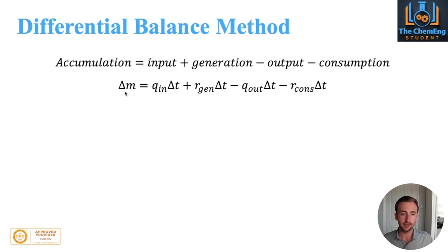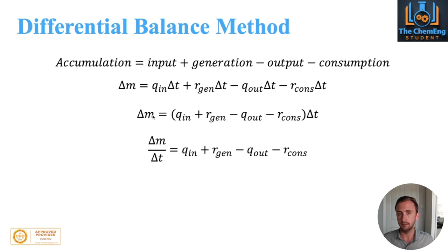Here we have Δm which is the change in mass and Δt is the increment of time. Q_in and Q_out are the flow of the material, and r_gen and r_cons is the generation and the consumption. We can take Δt out as a common factor and divide by Δt, so we have Δm/Δt equals the input, the generation, the output and the consumption.